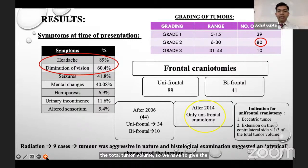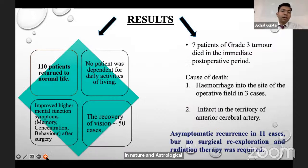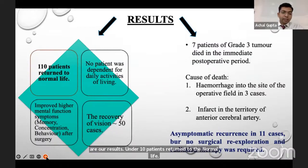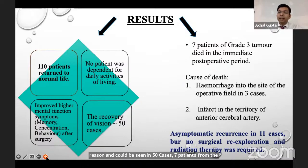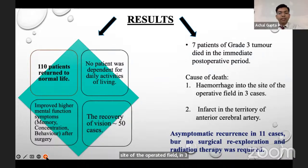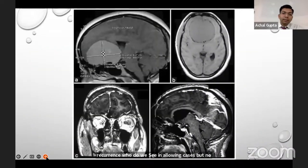Radiation was given in nine cases where the tumor was aggressive and histological examination suggested atypical characteristics. Overall, 110 patients returned to normal life and no patient was dependent for daily activities of living. Patients appreciated improvement in higher mental functions including memory, concentration, and behavior after surgery, and recovery of vision was seen in 50 cases. Seven patients with grade 3 tumors died in the immediate post-operative period — three from hemorrhage at the operative site and others from infarction of the anterior cerebral artery. Asymptomatic recurrence was seen in 11 cases but no patient required surgical re-exploration or radiation therapy.